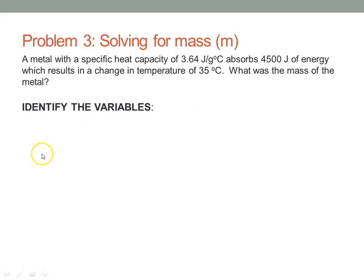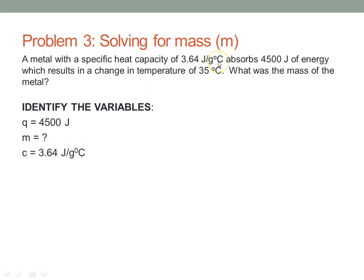Always identify the variables. In this case, Q is 4500 joules. M is what we're solving for, so it's a question mark. C is given as 3.64 joules per gram degree C. And our delta T — we don't have to calculate it — it was given as 35 degrees C.